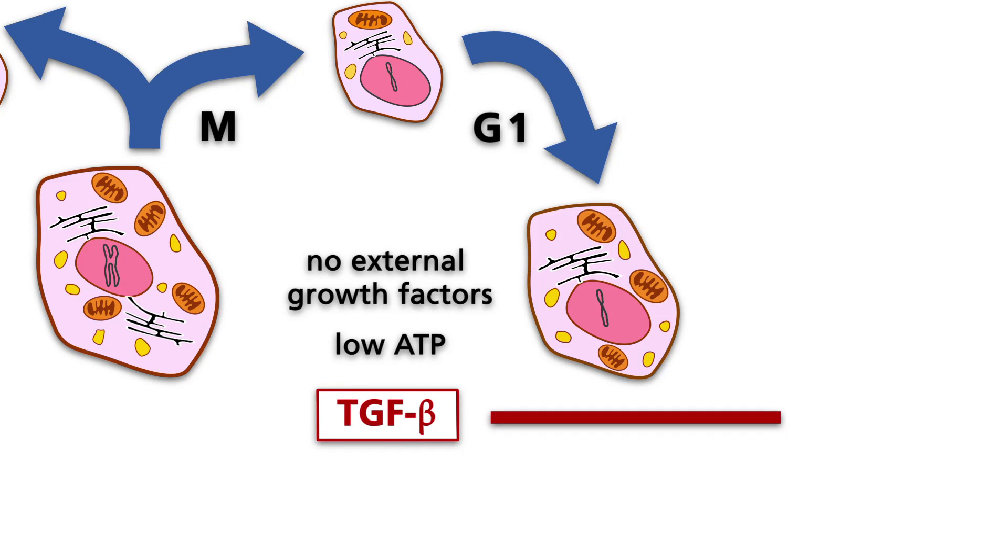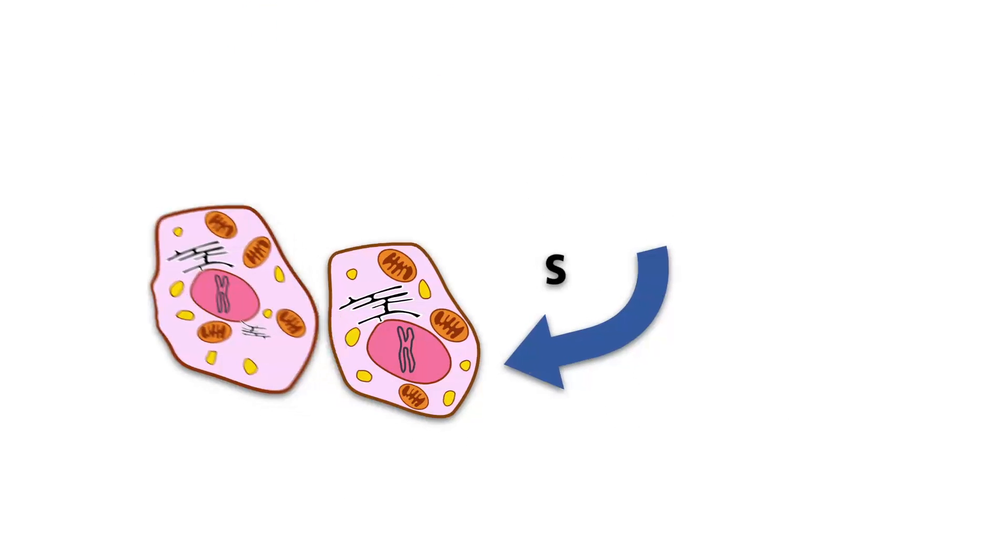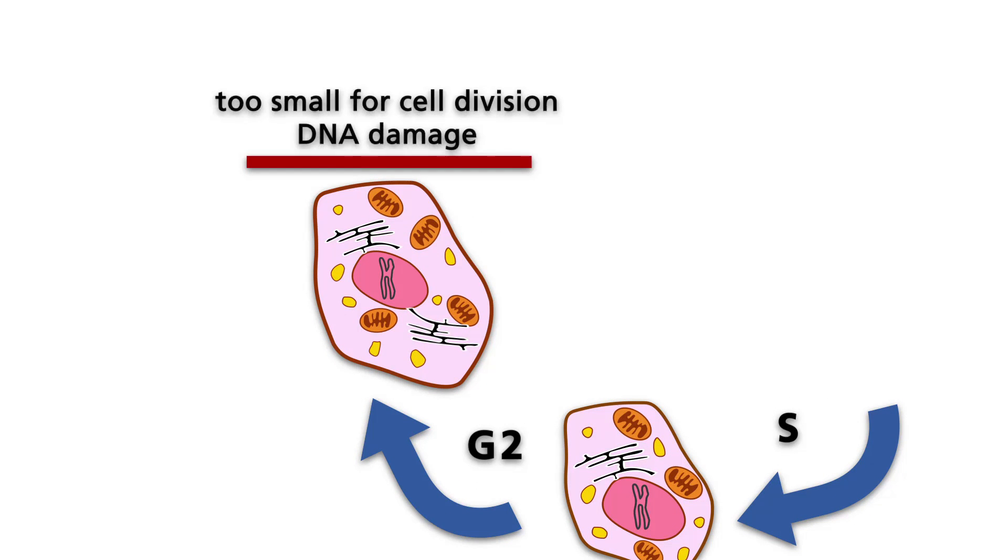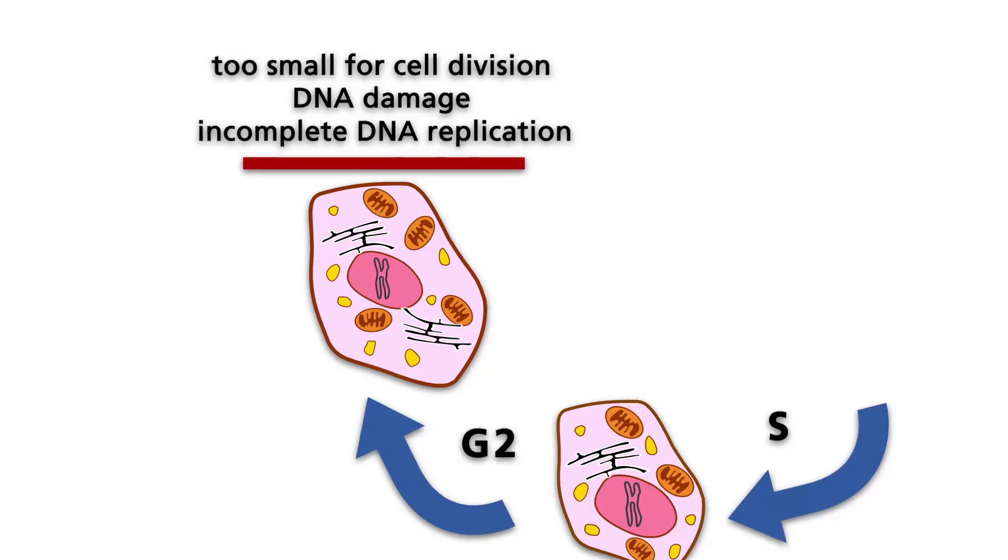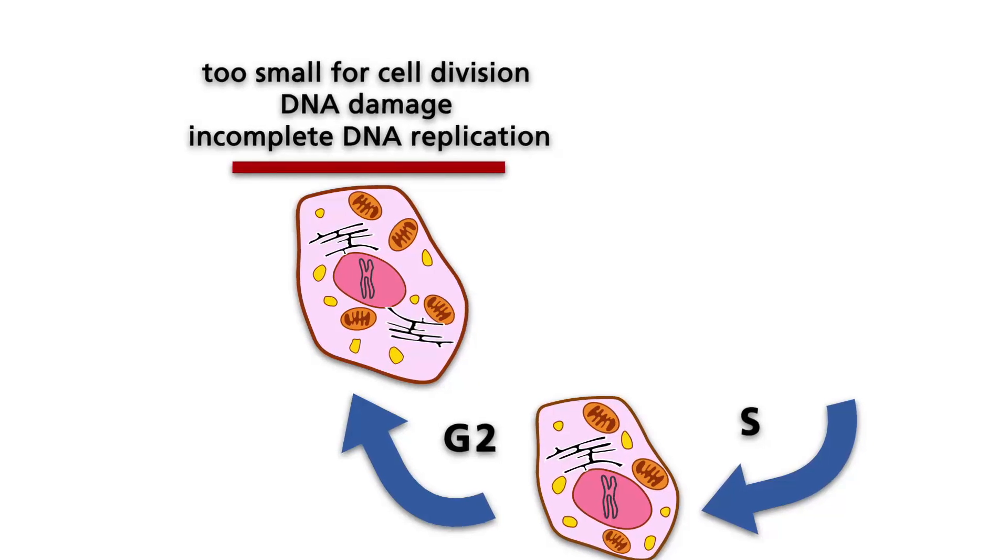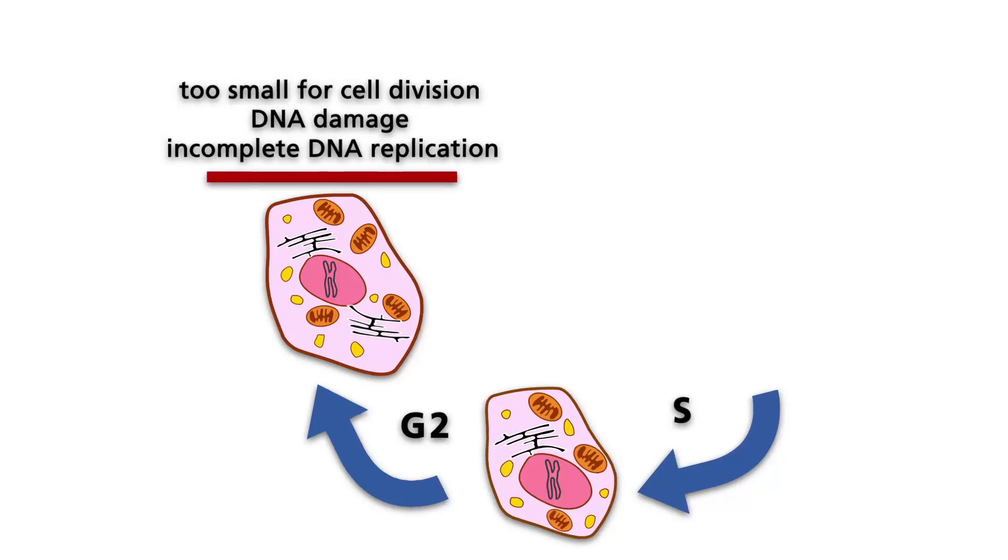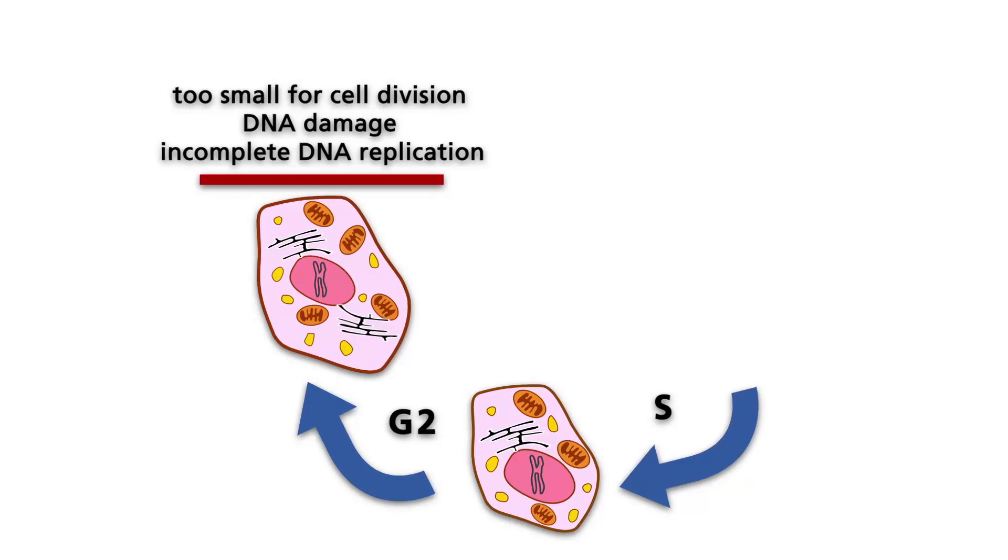The second significant checkpoint is G2M. Here, there are three factors that lead to cell cycle arrest. The mitotic prophase will not start if the cell is too small for division, a chromosome is significantly damaged, or the DNA has not replicated completely.